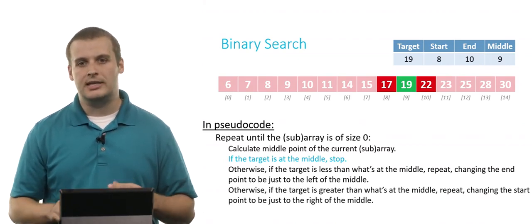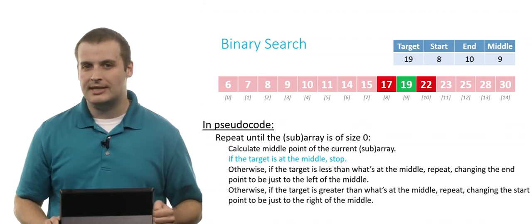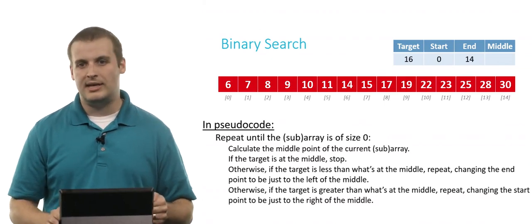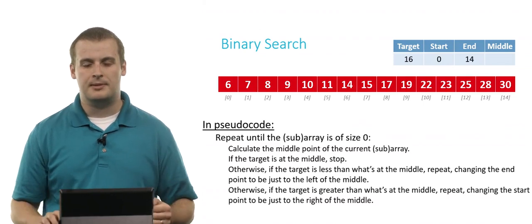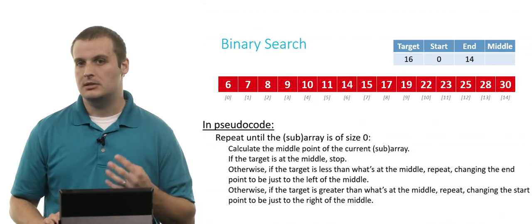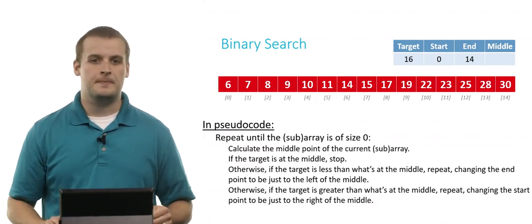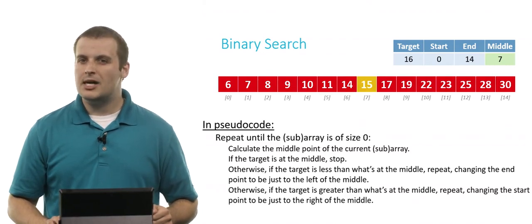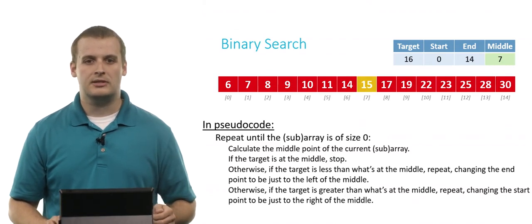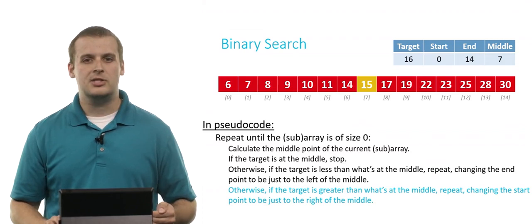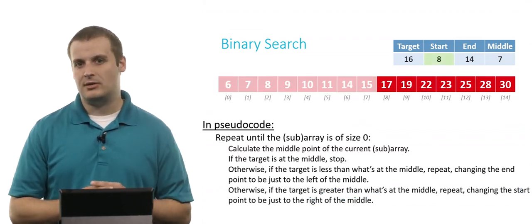Does this algorithm work if the target is not in the array? Let's look for the element 16, which visually we can see does not exist in the array. Start is 0, end is 14. We go through the process again: calculate the midpoint — 14 plus 0 divided by 2 is 7. Is 15 what we're looking for? No — we're looking for something slightly bigger. The target is greater than the midpoint value, so we set the new start to 8, effectively ignoring the entire left half of the array.